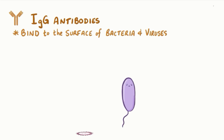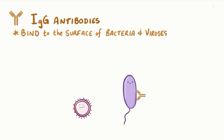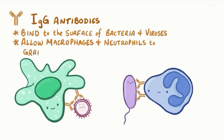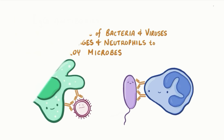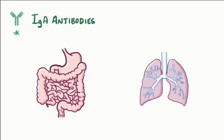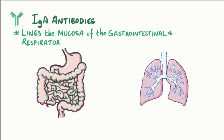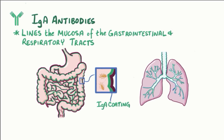IgG antibodies stick to the surface of bacteria and viruses, and that prevents them from adhering to and infecting cells. IgG also allows macrophages and neutrophils to grab and destroy the microbes. IgA antibodies line the mucosal tissues like the gastrointestinal and respiratory tracts and stop microbes from invading in the first place.